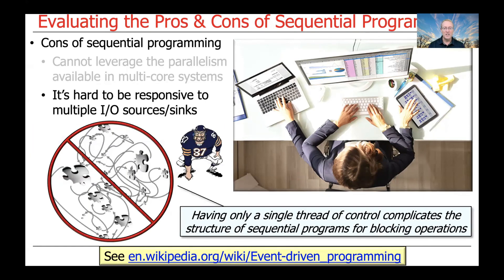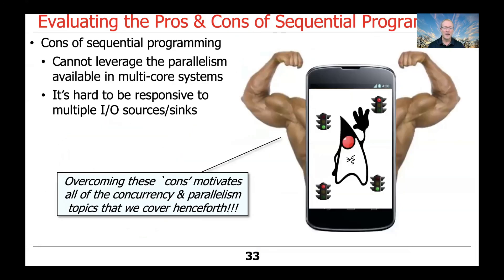Moreover, having only a single thread of control complicates the structure of sequential programs with respect to blocking operations. If you only have one thread and that thread blocks waiting for input or output, then everything else in the program will come to a screeching halt. Getting around this often requires very convoluted event-driven programming techniques that are unwieldy and lead to various inherent and accidental complexities. Overcoming these cons motivates all the coverage on concurrent and parallel programming topics in the upcoming lessons.